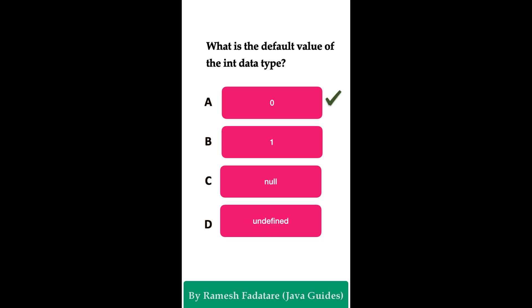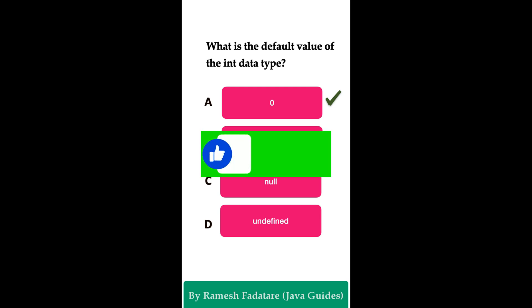The correct answer is Zero. In Java, the default value of the int data type is zero. This default value is automatically assigned to an int variable if it is declared as a class member or instance variable and not explicitly initialized. Local variables in methods must be explicitly initialized before use.